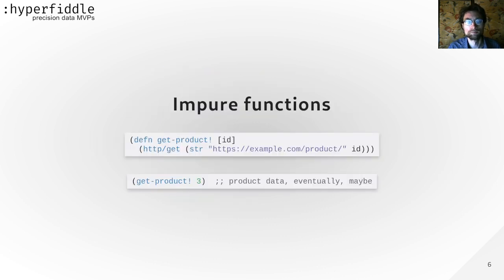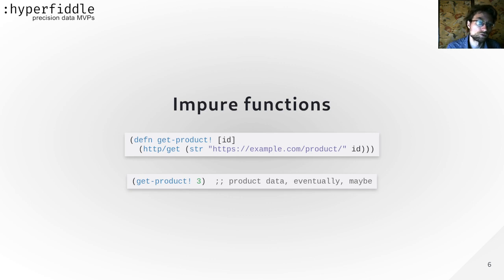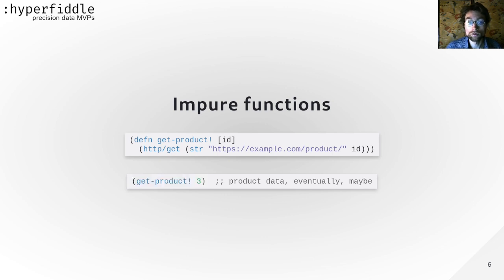So what is a functional effect system? We're going to start with an example. We have a remote service that implements a REST API and provides information about products. We can give it an ID and it will return information about the product. This is the imperative way: we write a function that takes the product ID, constructs the request, calls the service, waits for the result, and returns it. It's an impure function because it performs effects — that's imperative programming.